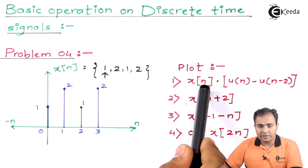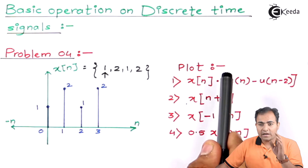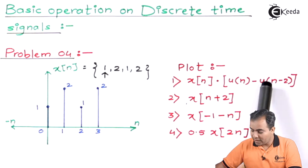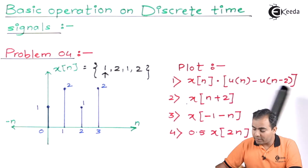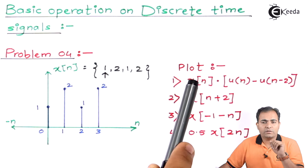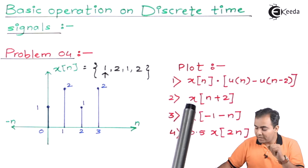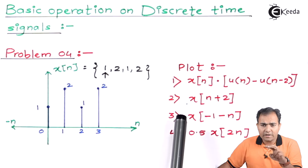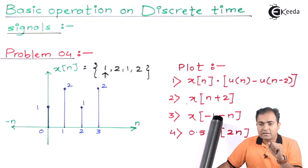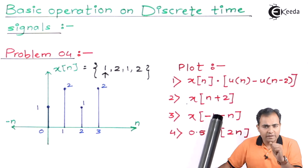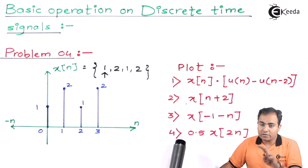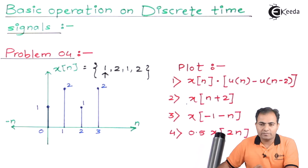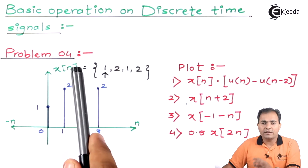The first part requires multiplying x[n] with u[n] subtracted from u[n] delayed by 2. The second part is x[n+2], meaning we advance the function by 2. The third part involves two operations: time shifting and folding (mirror image). The fourth part involves time scaling and amplitude scaling. Now let's perform all these operations on x[n] one by one.